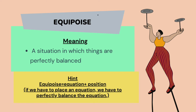A hint to memorize this word: equipoise — equation, position. If we have to balance an equation, we have to perfectly balance it. You have seen balanced or simultaneous equations in which there is an equal sign between two variables or two quantities, and we have to equalize both of them.